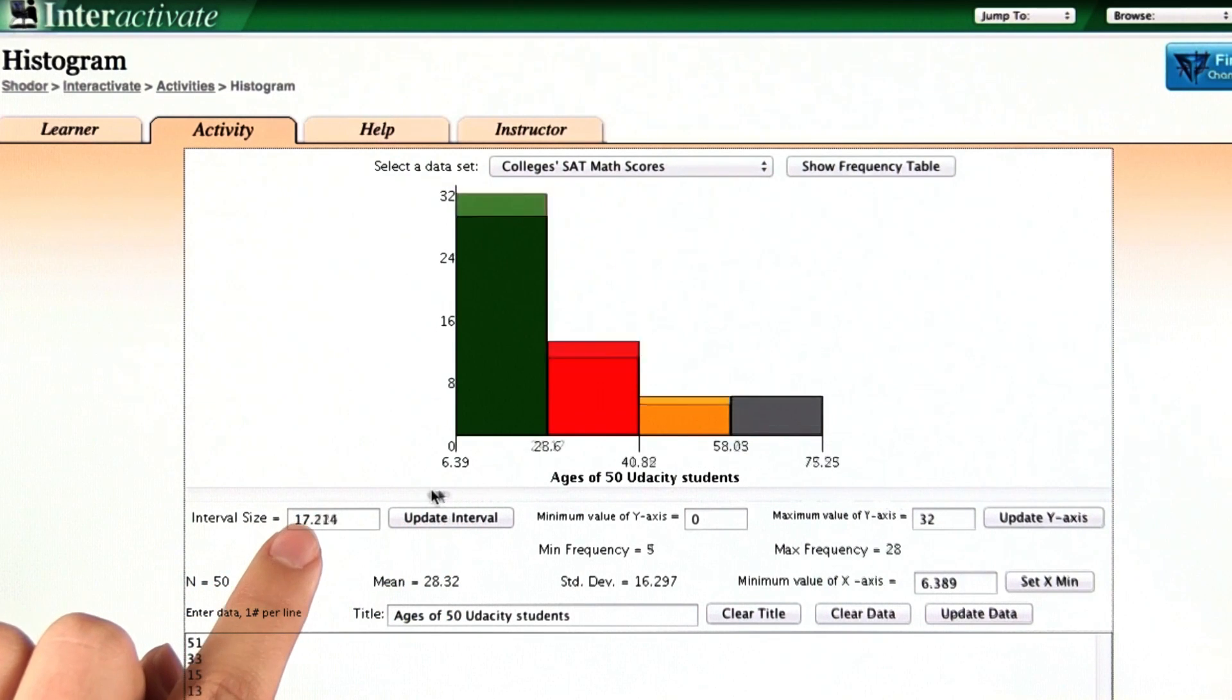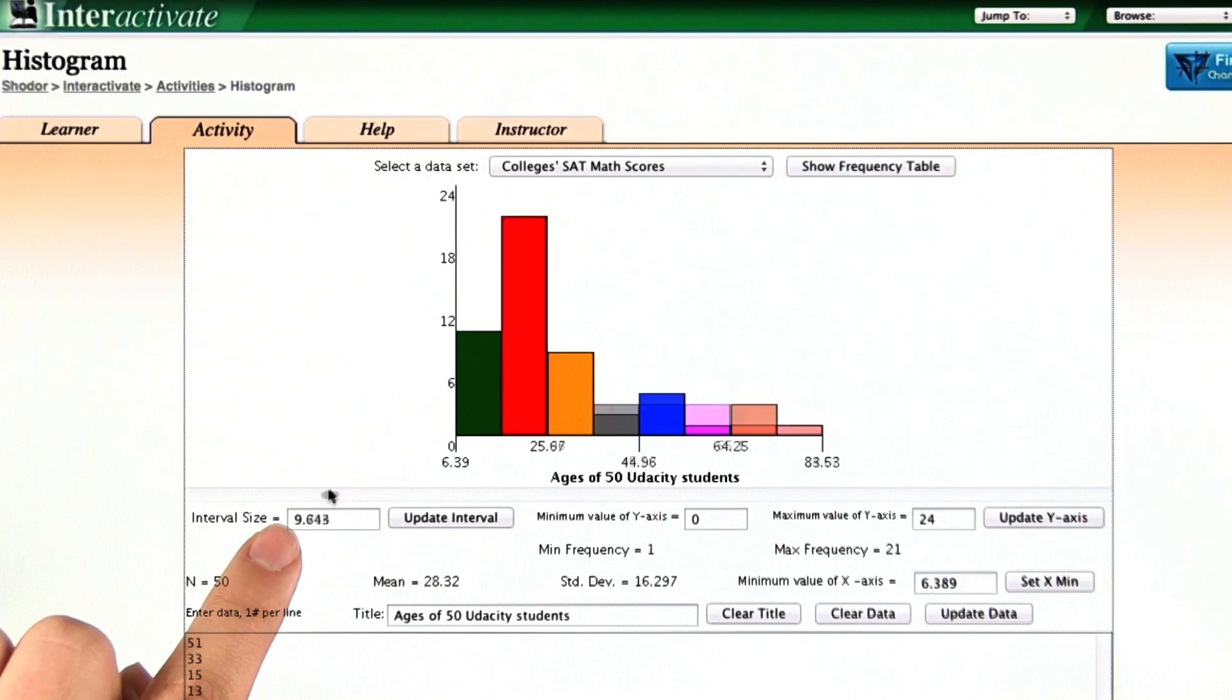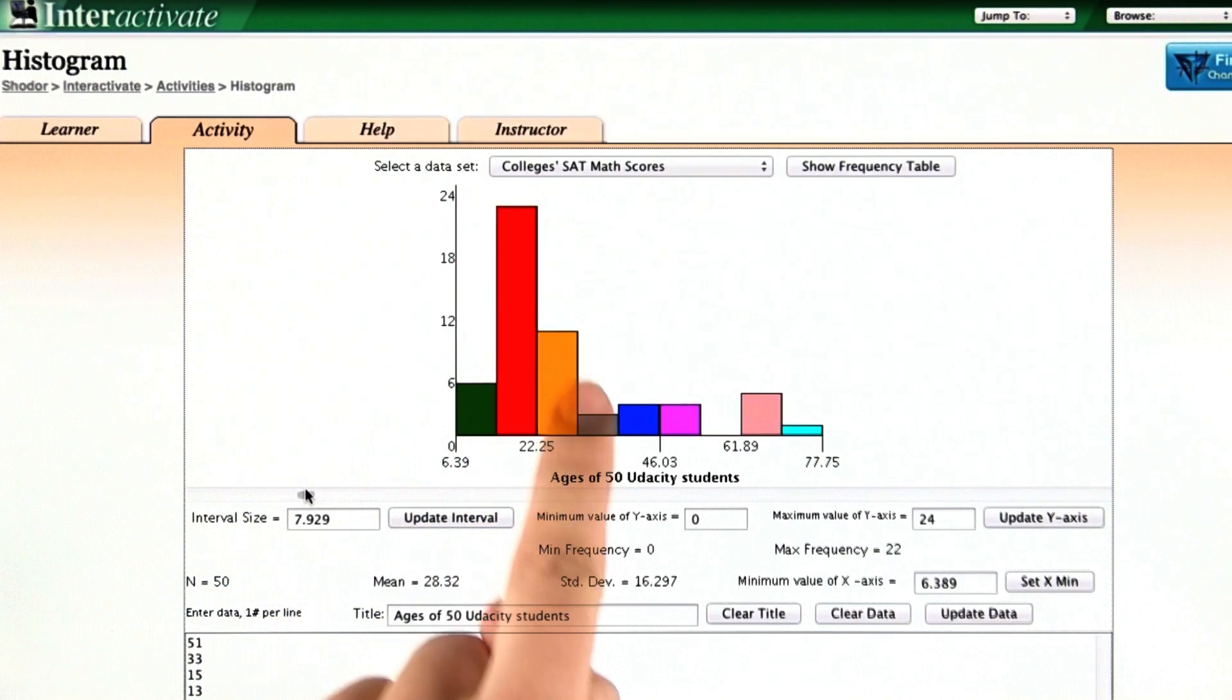So let's get a smaller bin size. Here you can kind of see better the shape of the histogram, that it peaks at around age 20.